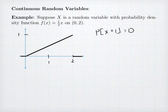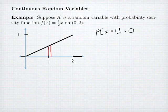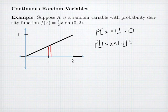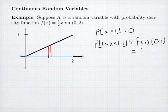What the density says is: if I'm interested in the probability of being in a small interval around that point, for example, what's the probability that I'm between 1 and 1.1? Then the probability can be approximated using the density. The probability that 1 is less than x is less than 1.1 is going to be approximately equal to the value of my density f(1) times the width of my interval, 0.1. The value of my density is one-half times 0.1, giving 0.5 times 0.1 equals 0.05.